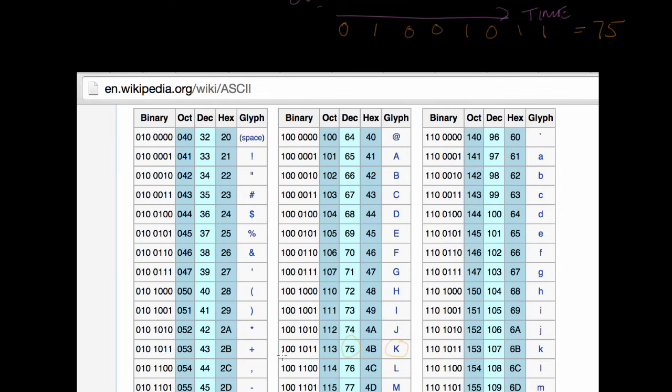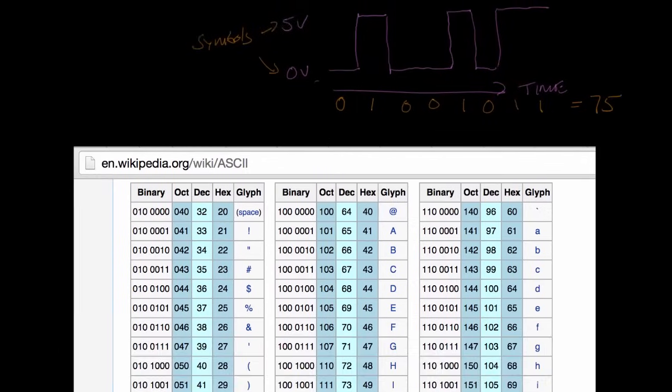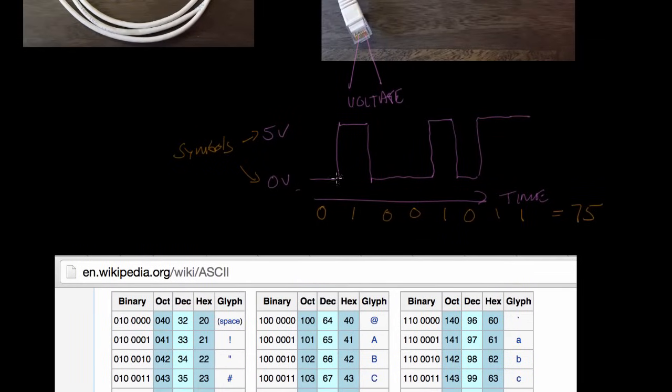And you can see they also have it here in binary. This is what we have up here. The 1001011 is the binary letter for K. And so you can see that by using this mapping and by varying voltages like this, we're able to send any information that we wanted to.